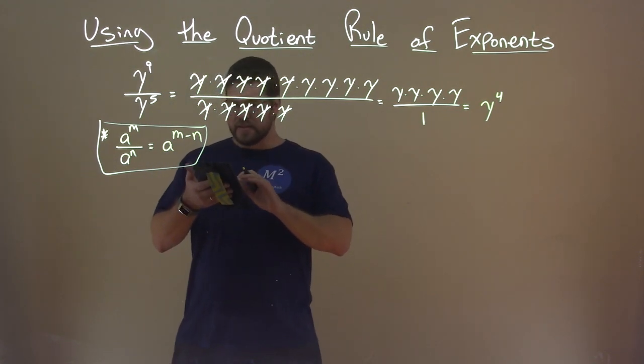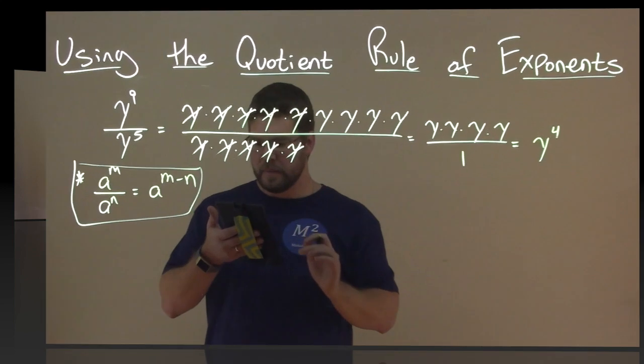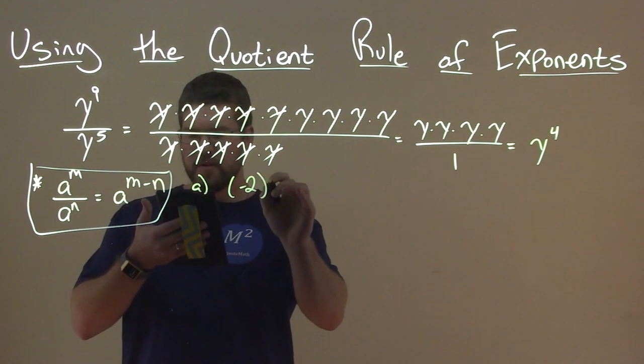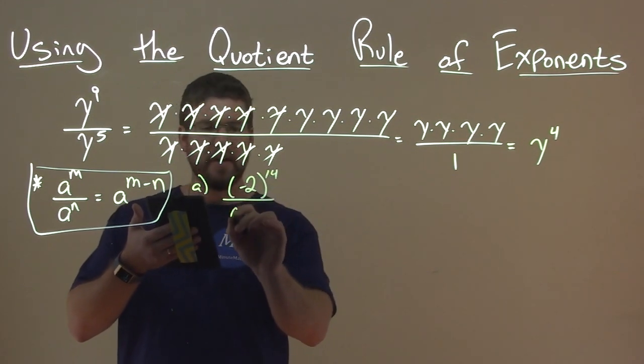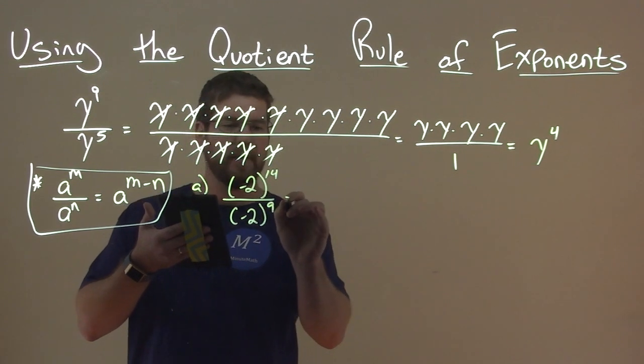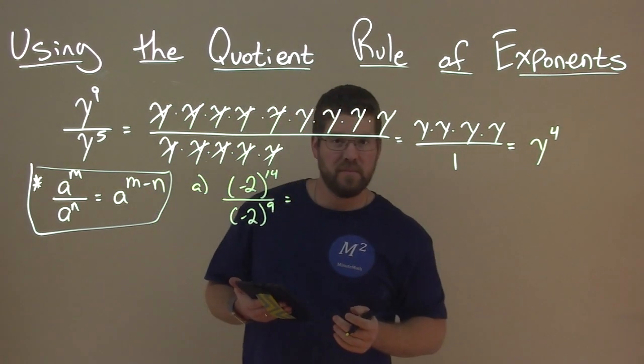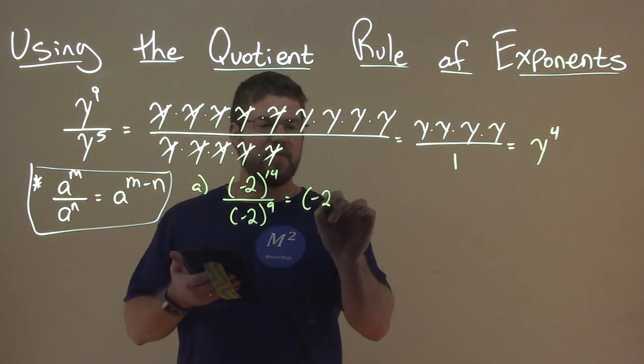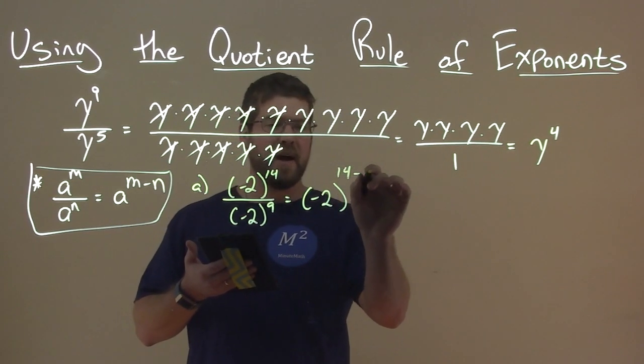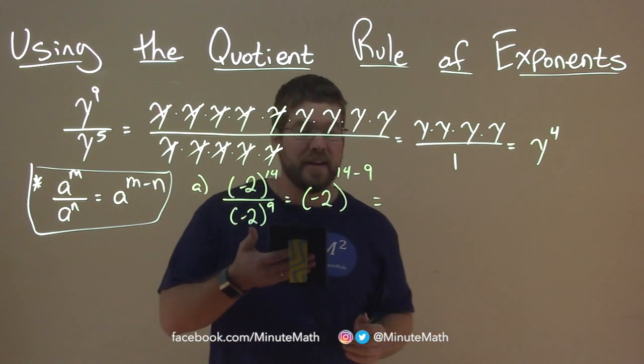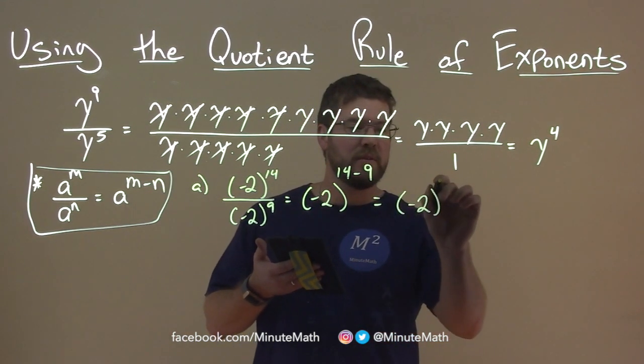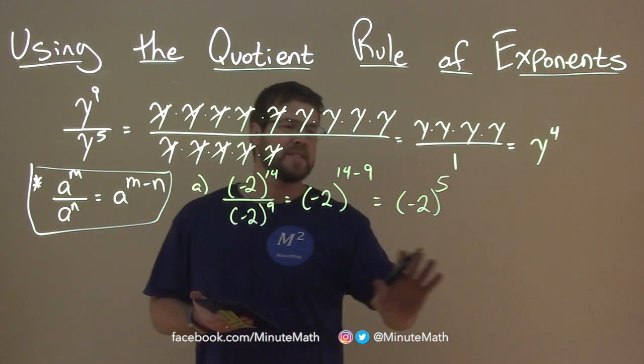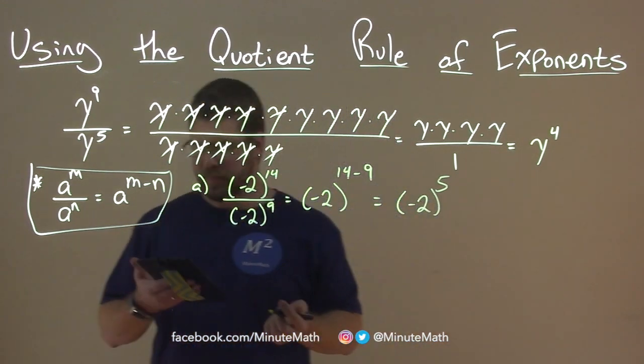So, let's go through some examples here. The first one, we have negative 2 to the 14th power over negative 2 to the 9th power. Now, notice that they have the same base, negative 2, so we can apply the quotient rule here. Well, that's just negative 2 to the 14 minus 9 power, and 14 minus 9 is just 5. So, we have negative 2 to the fifth power, and that's all we're simplifying here. Of course, if you want to multiply it out, we could, but we're just showing how the quotient rule applies.